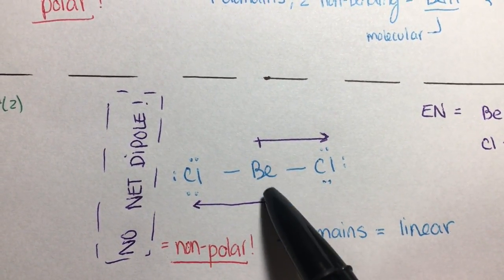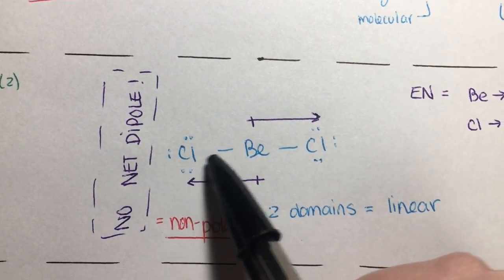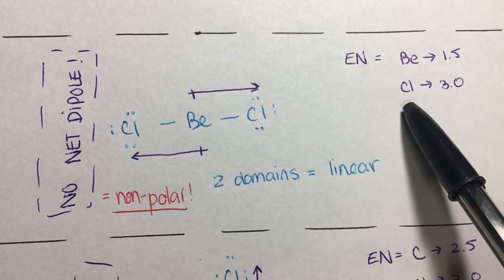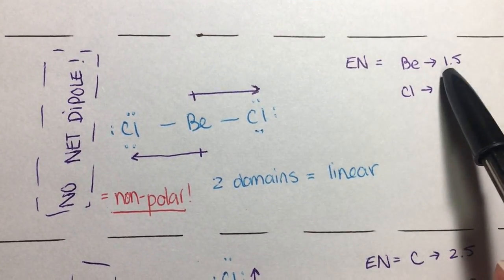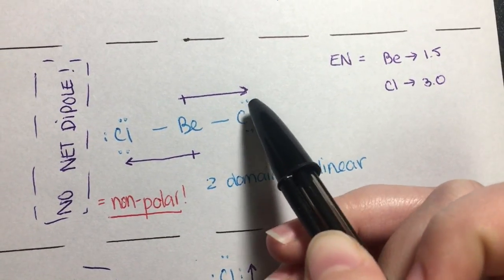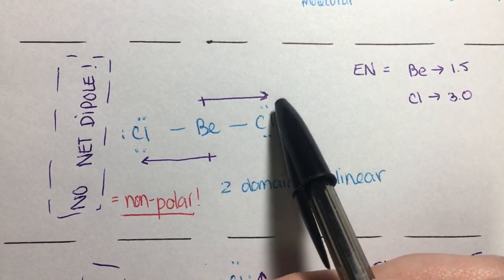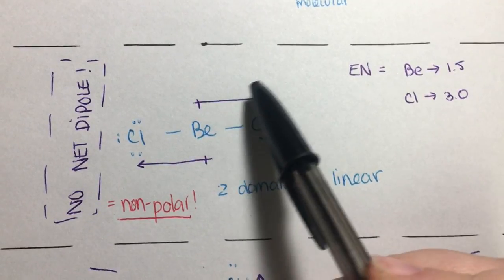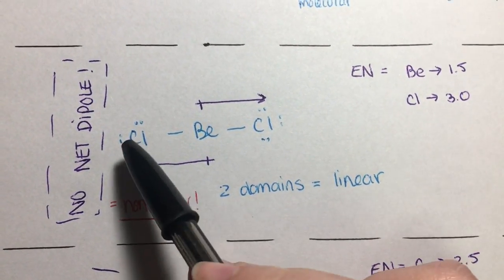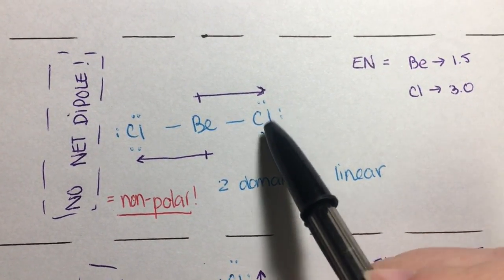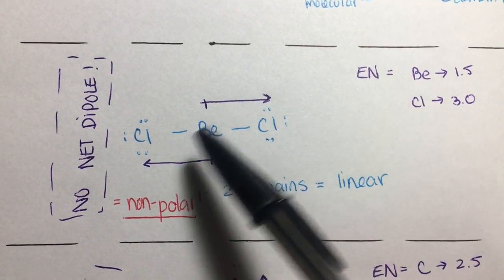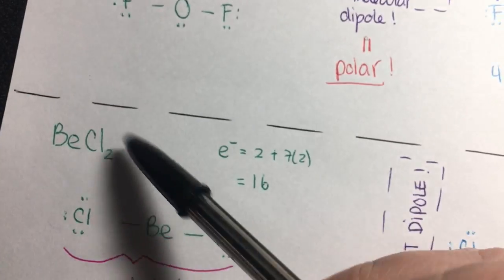Since there are no non-bonding pairs, two domains gives a linear geometry. We then figure out the electronegativity: chlorine's is 3.0 and beryllium's is only 1.5. So the dipoles are positive where beryllium is and negative where the chlorines are. Since this molecule is linear, one dipole goes one way and the other goes the opposite way — they cancel each other out and there is no net dipole. This molecule is non-polar because both domains are the same. If one were chlorine and one were fluorine, one would be more electronegative and there would be a net dipole, but because they're the same, they cancel.